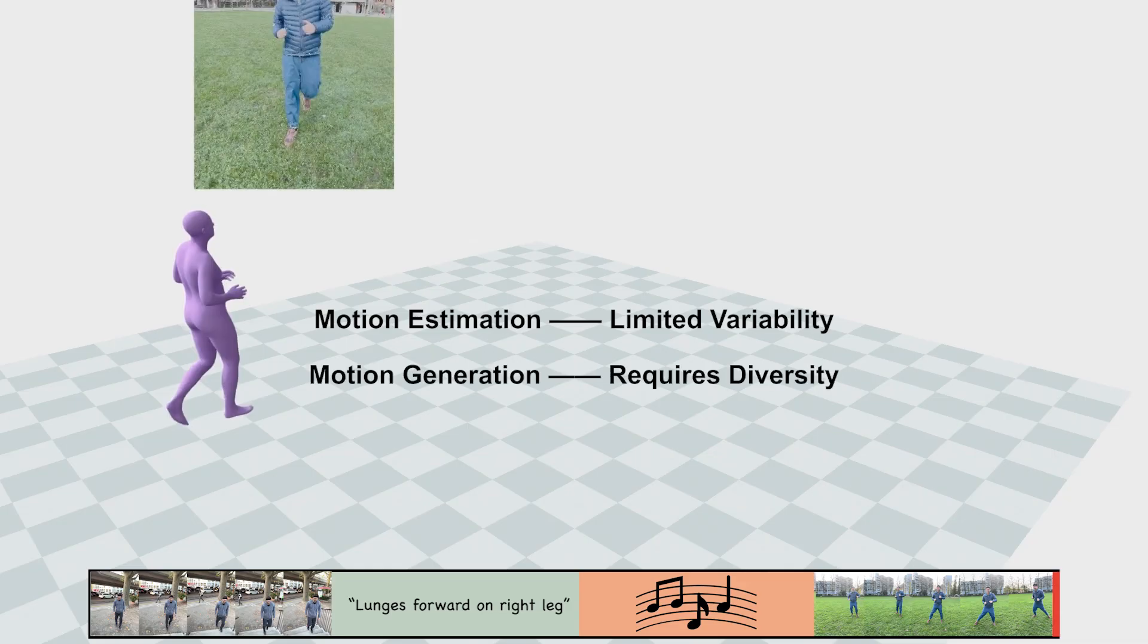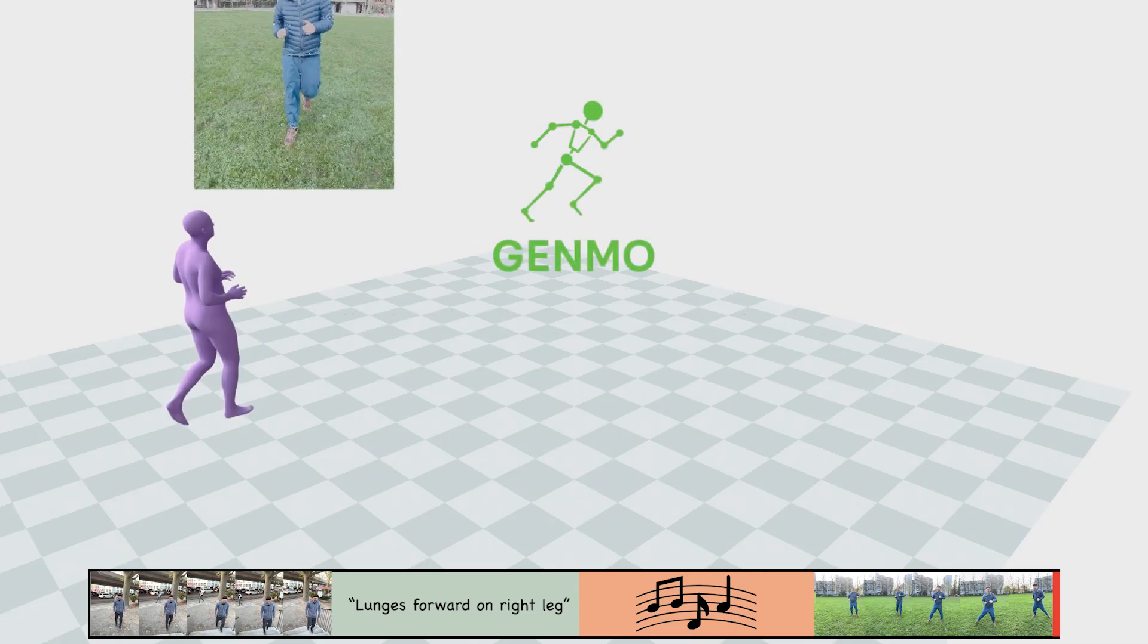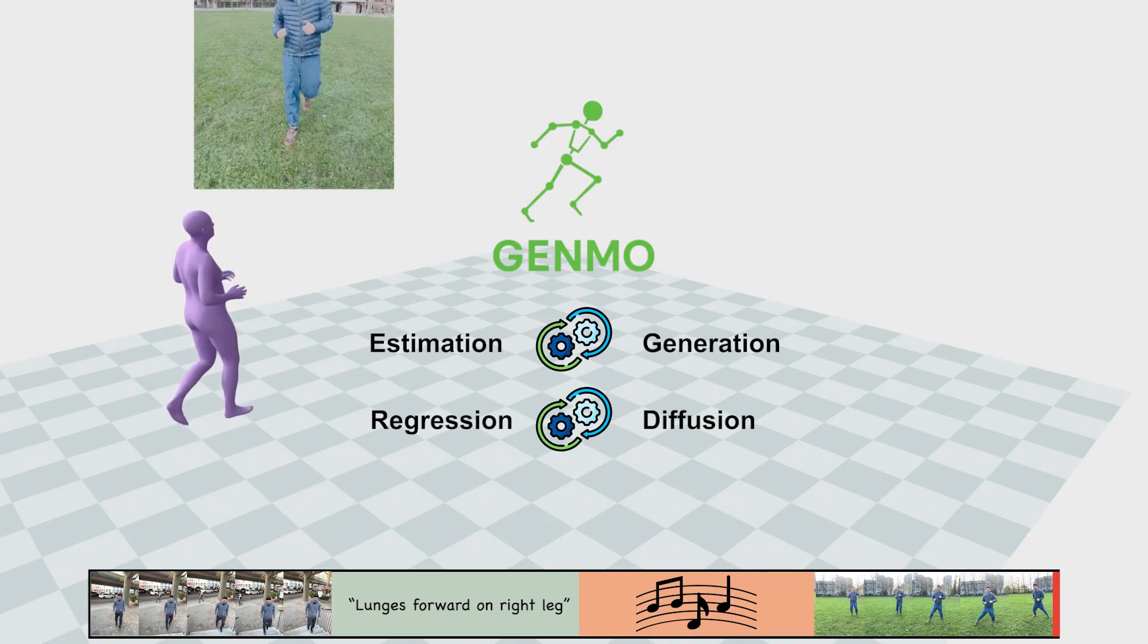Whereas text or music to motion generation requires creativity and diversity, Genmo overcomes these challenges by unifying motion estimation and generation within a single model, leveraging the synergy between regression and diffusion.